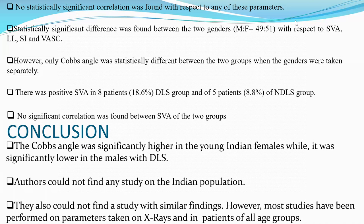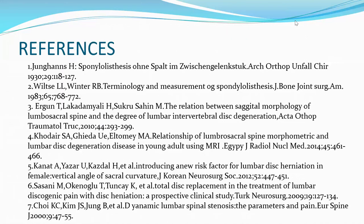Conclusion: The Cobb angle was significantly higher in young Indian females while it was significantly lower in males with DLS. The authors could not find any prior study on the Indian population with similar findings. Most existing studies have been performed on parameters taken from X-rays across all patient groups.